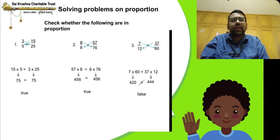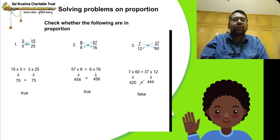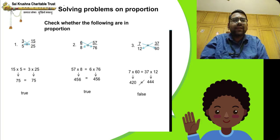Solving problems on proportion — check whether the following are in proportion. 3/5 = 15/25: cross multiplying gives 15×5 = 75 and 3×25 = 75; both sides equal, so it is in proportion — true. 6/8 = 57/76: cross multiply gives 57×8 = 456 and 6×76 = 456; true. 7/12 = 37/60: 7×60 = 420 and 37×12 = 444; not equal, so not in proportion — false. We will continue in the next session.